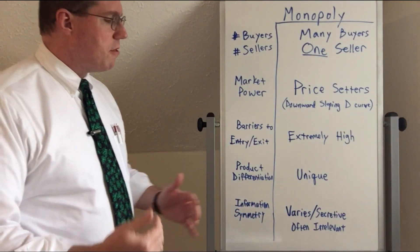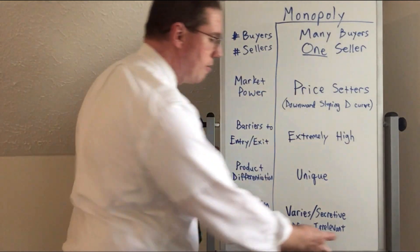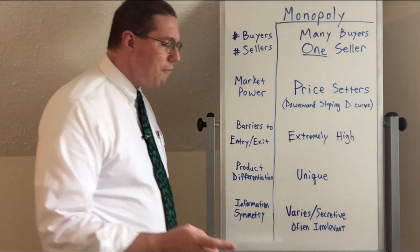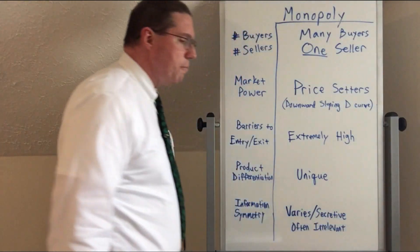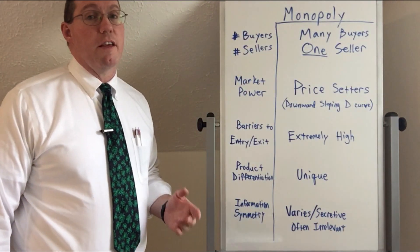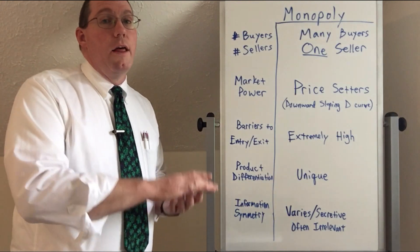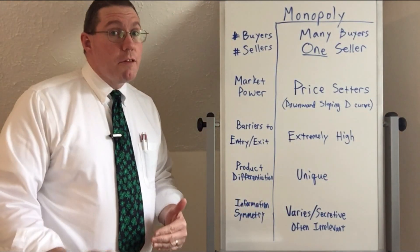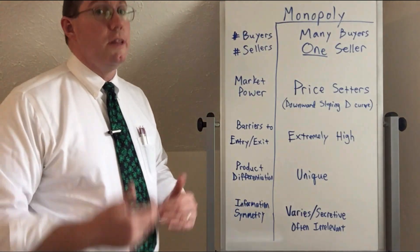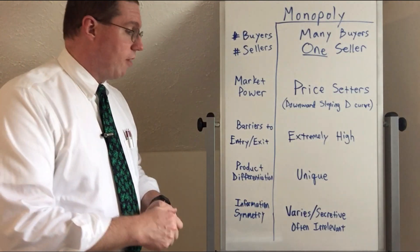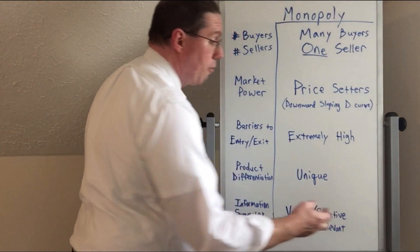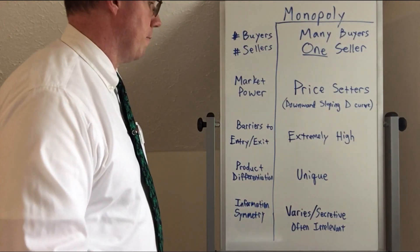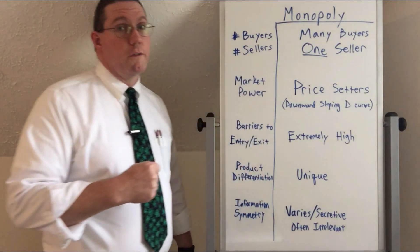Information symmetry in a monopoly varies. Generally speaking, it's somewhat irrelevant because they're the only sellers, so it doesn't matter if anybody knows all their information. However, monopolies do tend to be secretive. One reason is they want to hide their barriers to entry and the uniqueness of their product from governments, because if governments find out competition could exist, they will allow it. So monopolies keep many qualities of their industry secret.